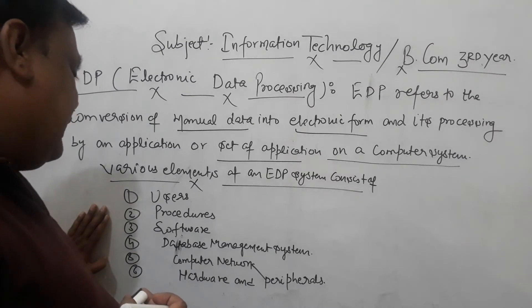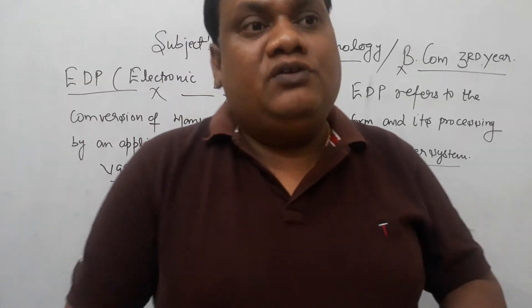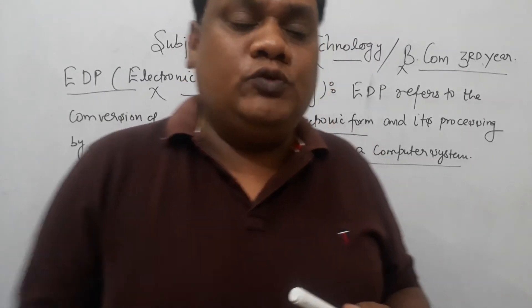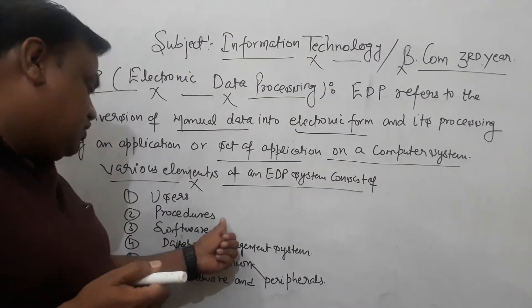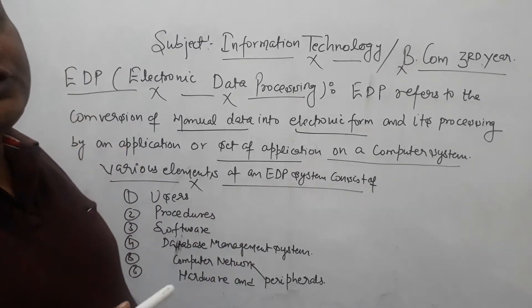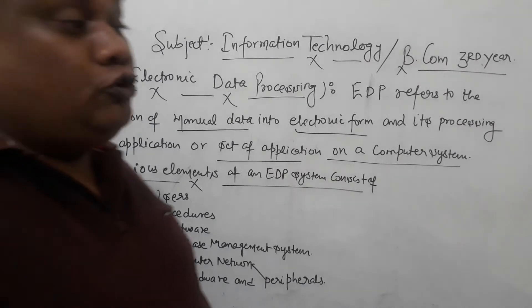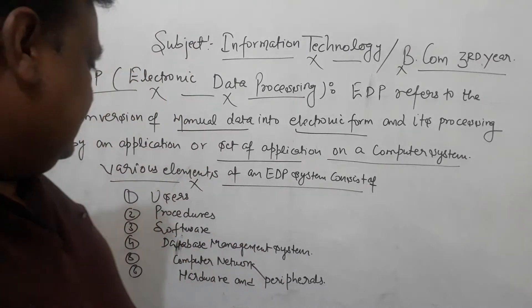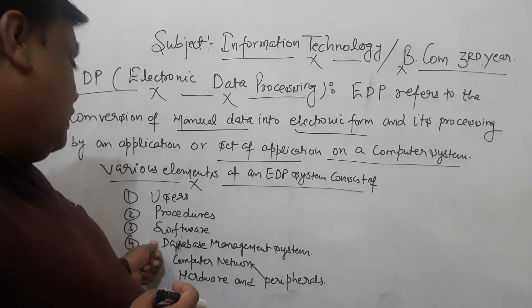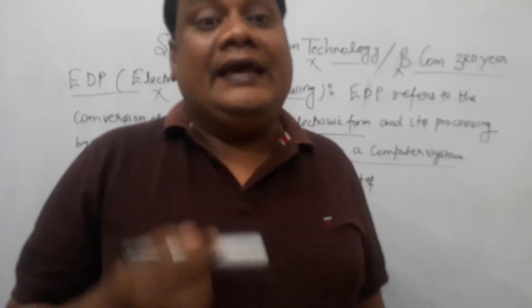These are the six elements of Electronic Data Processing: users, procedures, software, data management system, computer networks, and hardware. What is a user? A user provides input and receives output — using input devices like keyboard and mouse, and output units like printers. Without software, we cannot process data in electronic format.